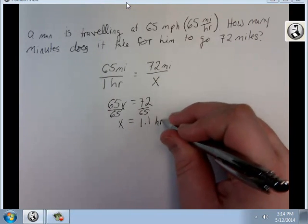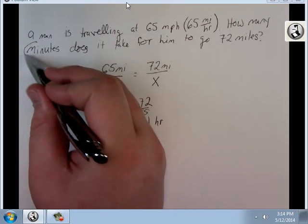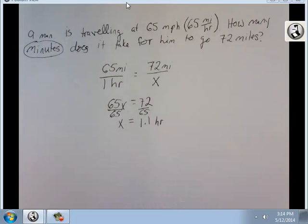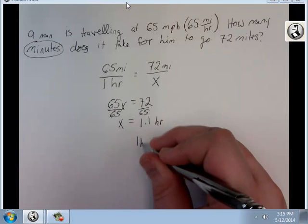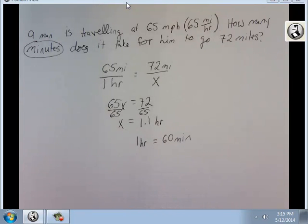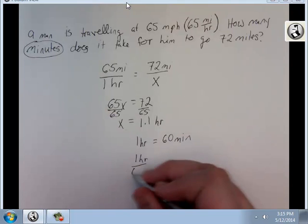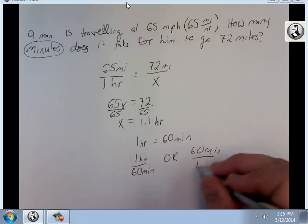The problem is, that's not what the question is asking me. This one's asking me about minutes. So I need to take my 1.1 hours and translate it into minutes. Now, this is a relationship that I'm hoping most people know. But we know that 1 hour equals 60 minutes. To write this as a ratio, I can do 1 hour over 60 minutes or 60 minutes over 1 hour. Either one of those will work.